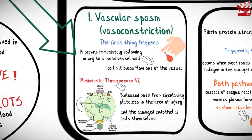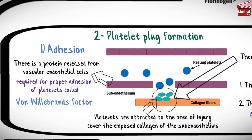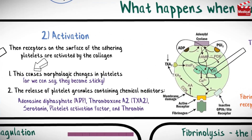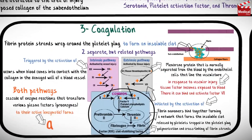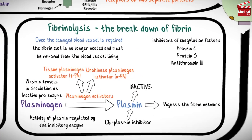To summarize the steps of hemostasis: first, vascular spasm occurs to limit blood loss. Then platelets adhere to collagen in the subendothelial cells, get activated and release their contents, then aggregate forming a platelet plug. Then the blood coagulation cascade starts, forming a fibrin network leading to an insoluble clot. When healing occurs, plasmin digests fibrin and dissolves the clot.